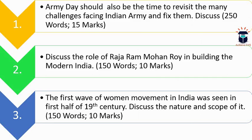Today I have included only one question from the current part and two from the static portion. The second question is: 'Discuss the role of Raja Ram Mohan Roy in building modern India.' Word limit is 150 and marks are 10. The third question is: 'The first wave of the women's movement in India was seen in the first half of the 19th century — discuss the nature and scope of it.' Word limit is 150 and marks are 10.